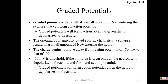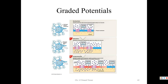It's very important that graded potentials can form action potentials if you can get to threshold. Negative 60 is the threshold. If the stimulus is great enough, it will go from negative 70 to negative 60. Once negative 60 is reached, it will form an action potential. If you depolarize to threshold, the neuron will fire.